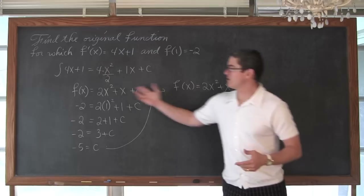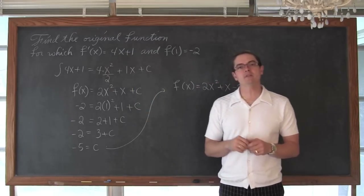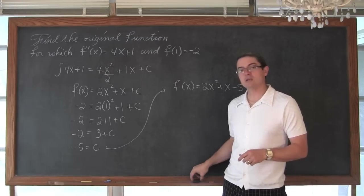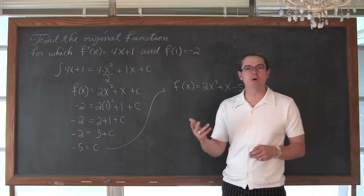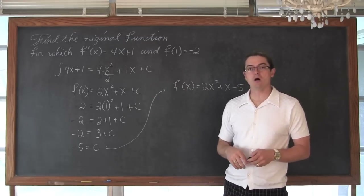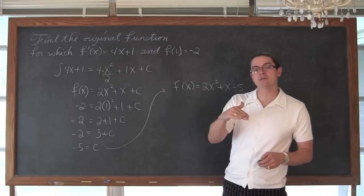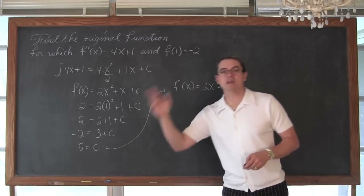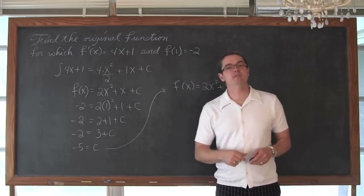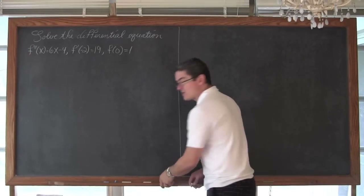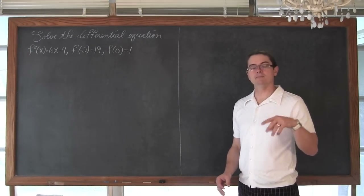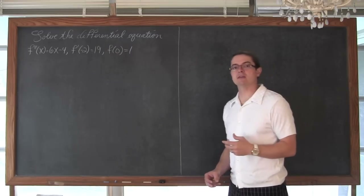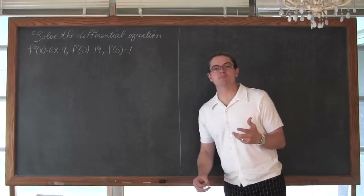I have one more example. It is going to be a fairly straightforward algebraic example, but they are going to be giving us the second derivative instead of just the first derivative, and that problem will simply need to be worked out in two parts as opposed to just one. Because we are going to have to find the antiderivative twice to go from the second derivative to the original function. I do apologize for forgetting that little dx notation at the end of my integral expression to say that we are finding the antiderivative with respect to x.